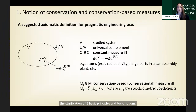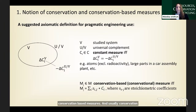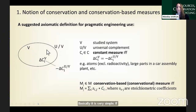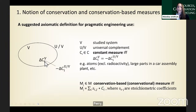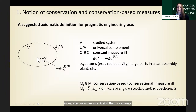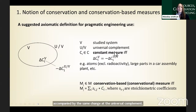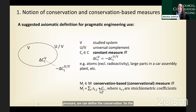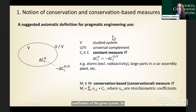The first basic notion is conservation and conservation-based measures. Conservation law is well-known in physics. In our suggested axiomatic definition: if we have a system V and its universal complement U\V, the constant measure cI can be interpreted such that any change within the system in this measure is always accompanied by the same change at the universal complement with opposite sign. The conservational measure is then this constant measure multiplied by the stoichiometric coefficients of the given system.